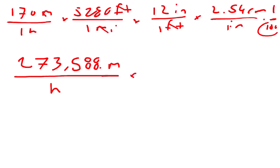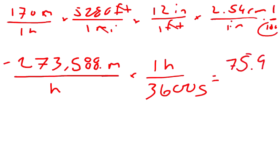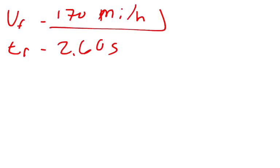I want to change that into seconds, so I multiply by 1 hour is equivalent to 3,600 seconds. Dividing by 3,600, it's equal to 75.9 meters per second. So I write this in as 75.9.